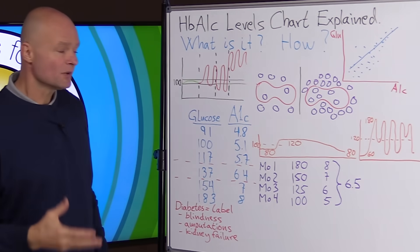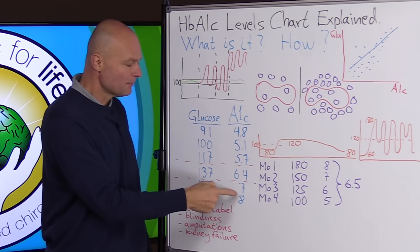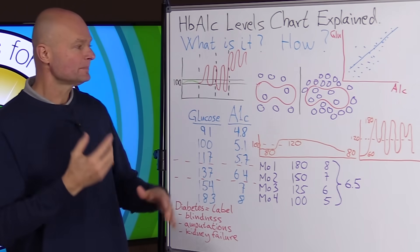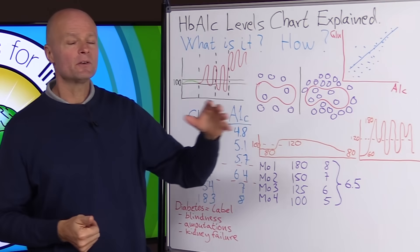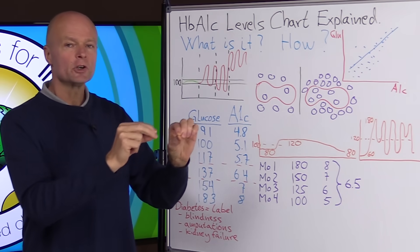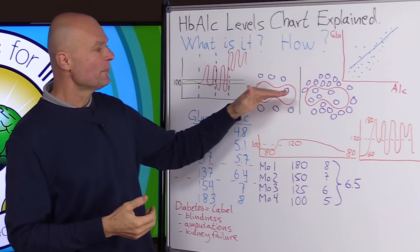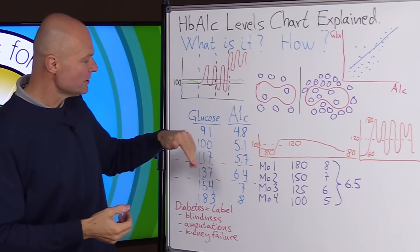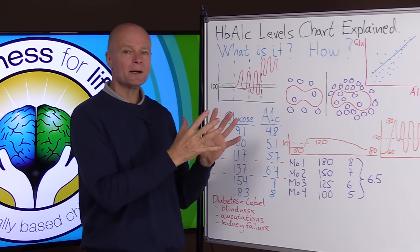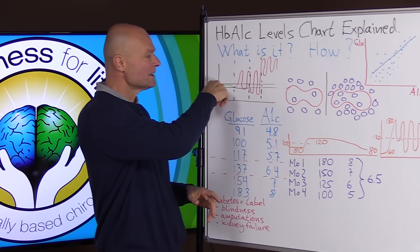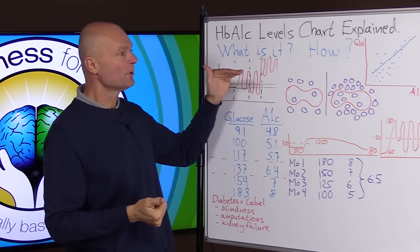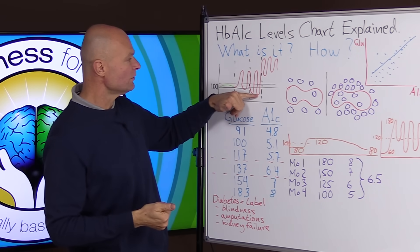Then they came up with a formula so now we can measure one marker A1c and get an average of what the average glucose is because a red blood cell lives about three to four months and during its lifetime it gets more and more sugar, more and more glucose stuck to it. So depending on how much glucose is stuck we can measure and figure out pretty much exactly what the average glucose was. So now we have a much much better measurement because even if it goes up and down a lot we can still figure out what it was on average and that's much more important to know.